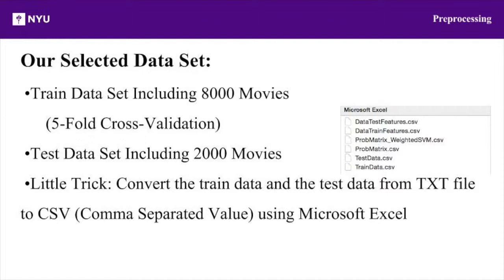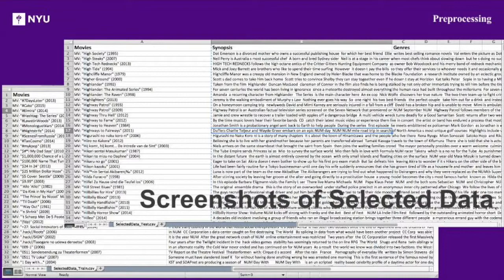To help get better results on a relatively small data sample, we decided to use five-fold cross-validation. In this method, the dataset is divided into five subsets and our machine learning method is repeated five times. Each time, one of the five subsets is used as the test set, and the other four subsets are put together to form a training set. Then the average error across all five trials is computed.